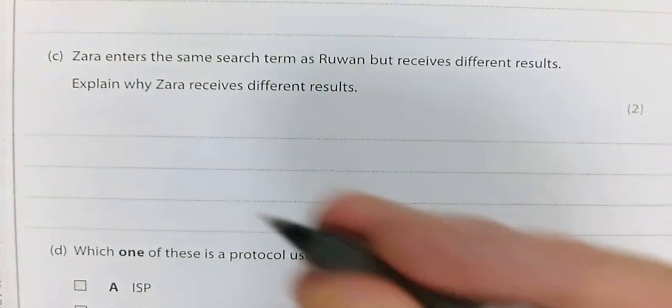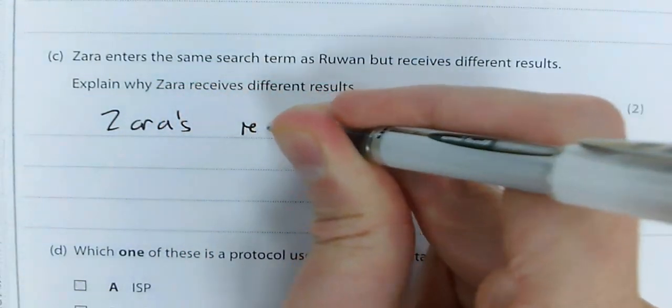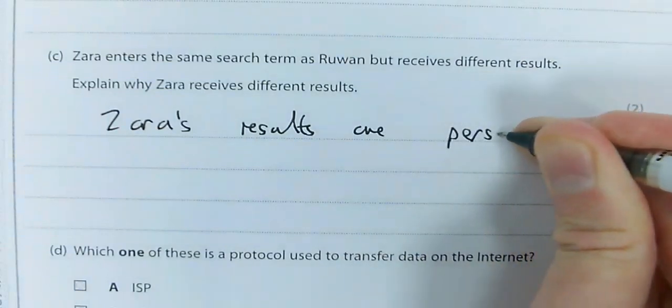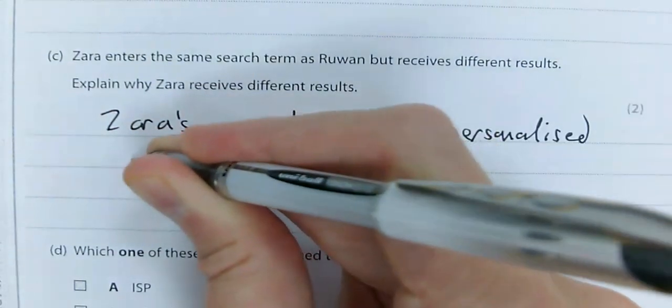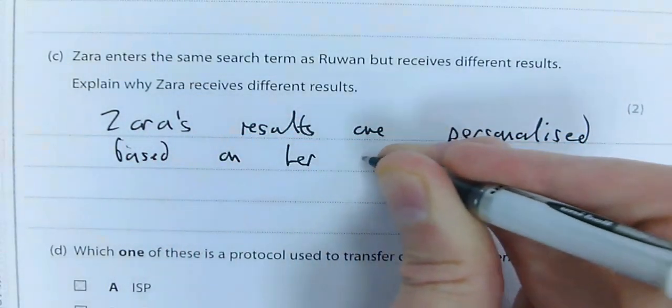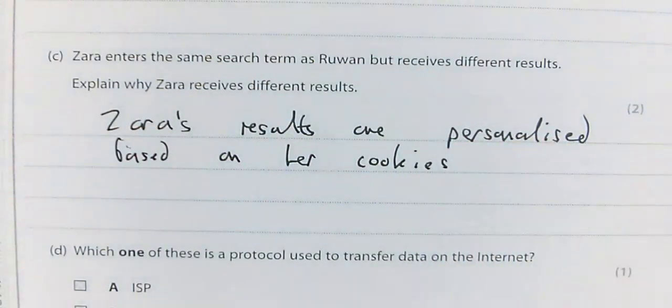Explanations such as, well, Zara's results are personalized based on her cookies, that little text file that you all have on your computer of your searches. They will be personalized. That would gain you two marks.